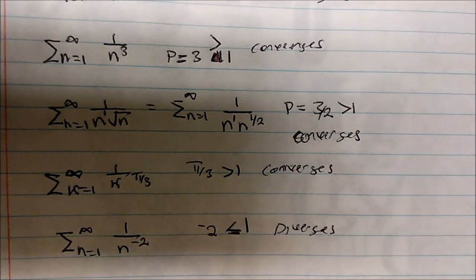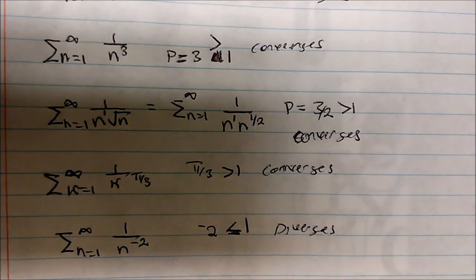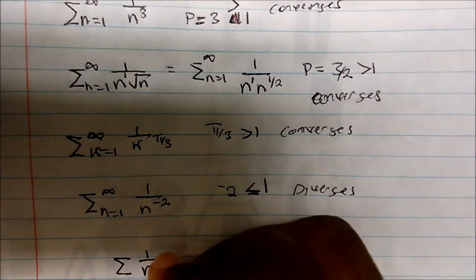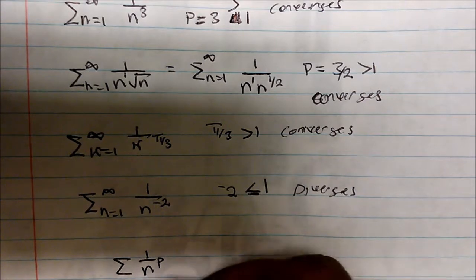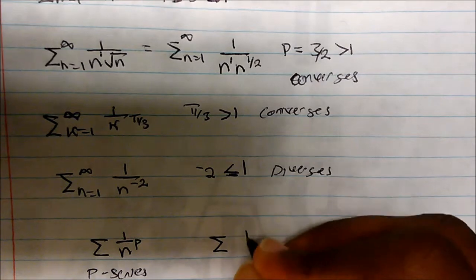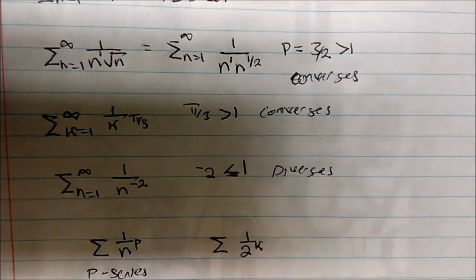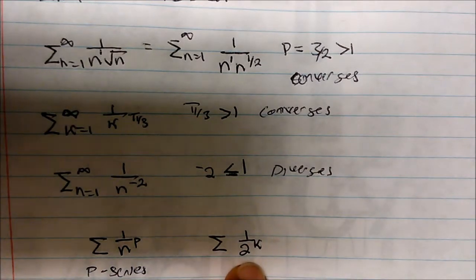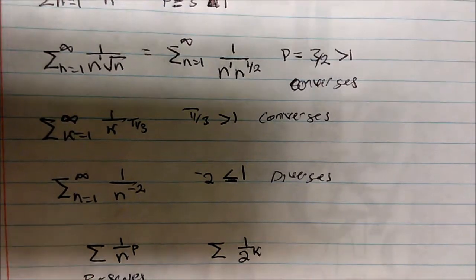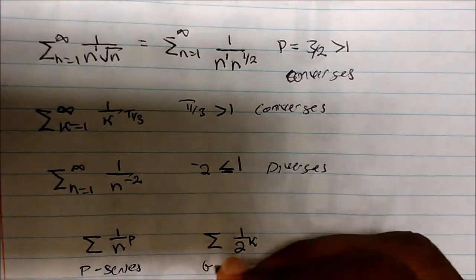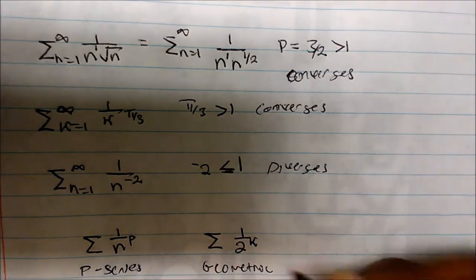Now an important point: do not confuse the P-series with the geometric series — that's a common mistake. The P-series is a sum of one over n to the P. The geometric series has a fixed base raised to a variable exponent, like one-half to the k. In the P-series the base is the variable n; in the geometric series the base is a fixed number. Be very careful about that distinction.